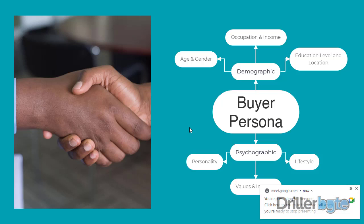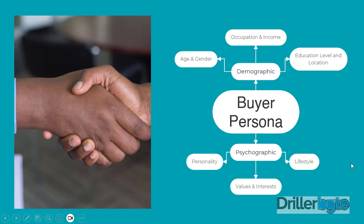Now we talk about buyer persona. When you are coming up with a digital strategy, this is one of the most important things you need to do — you need to know who you want to sell to. If you don't know who you want to sell to, your digital marketing is flawed. Your buyer persona is also your target audience. A buyer persona is one defined person; bring a lot of those people together and you have your target audience.